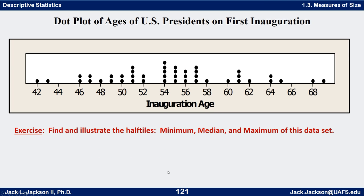Now we have a dot plot of the ages of U.S. presidents at their first inauguration. Find the minimum, maximum, and median by looking at the dots on this plot. The minimum and maximum should be pretty easy. The median takes a little more work. Press pause and try it, then come back. The minimum is the lowest value: 42. The maximum is the highest value: 69.